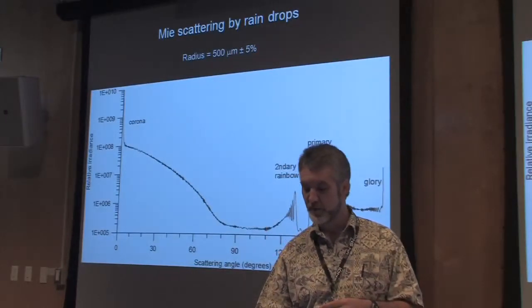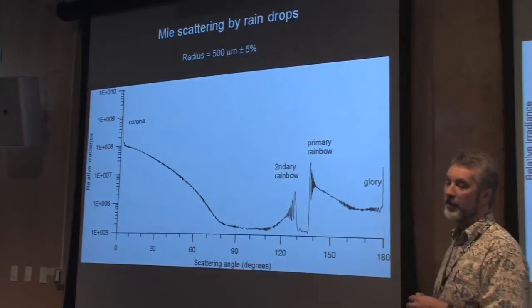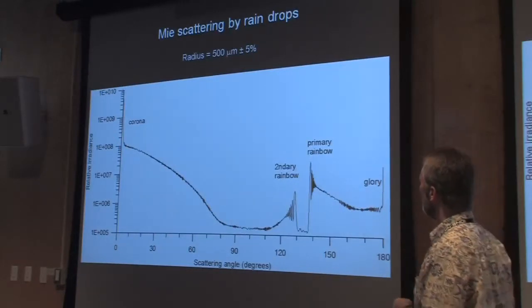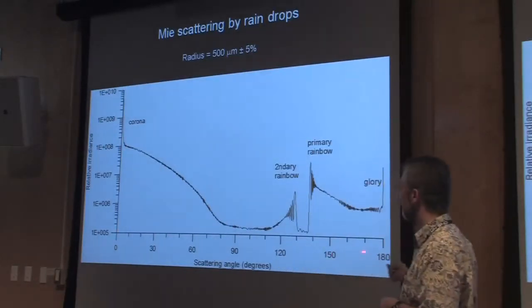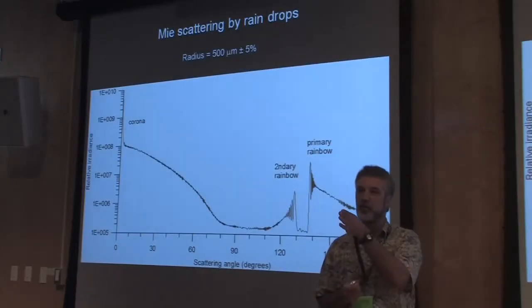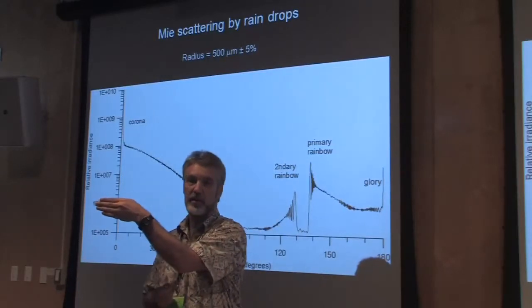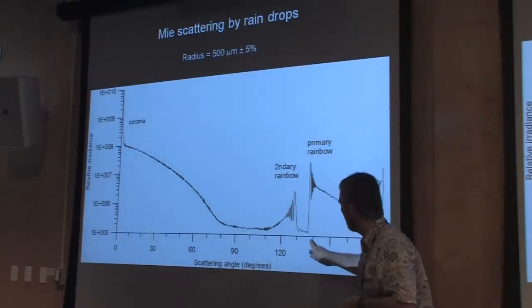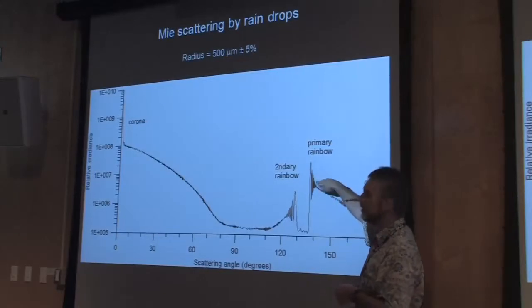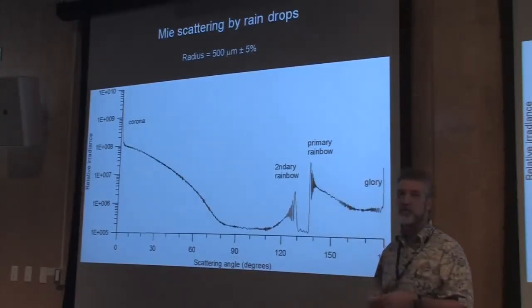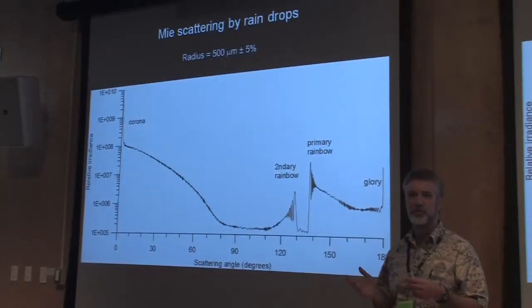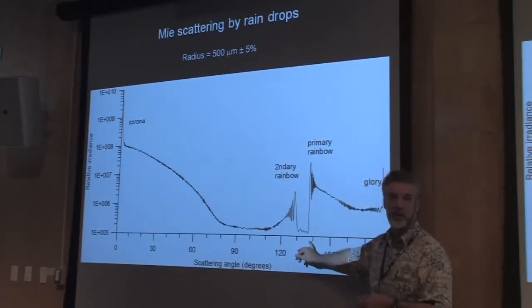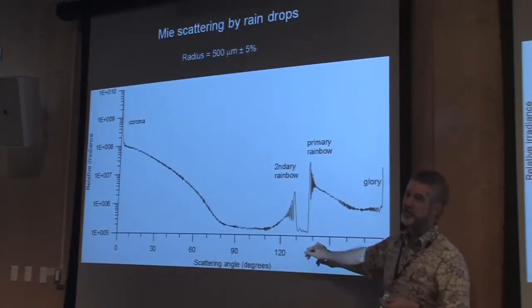My last two technical slides show Mie scattering calculations for raindrops — scattered irradiance as a function of scattering angle, which is the angle between where the light was going and where it ends up going after scattering. At about 140 degrees scattering angle there's a concentration of light with oscillations — this is the primary rainbow. 180 minus 42 degrees puts you at 140, so that scattering angle corresponds to what we just saw.